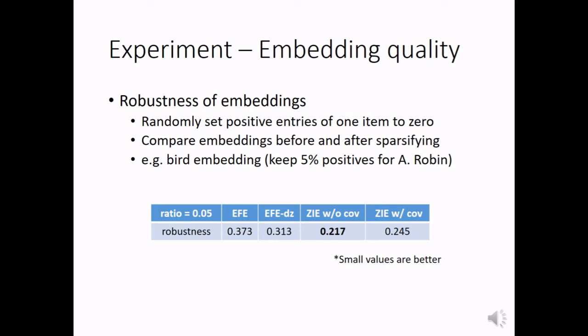The embedding vectors are more robust to data sparsity if they have smaller changes because of this data sparsity procedure. In the bird embedding task, we get results in this table. And we can see that our models can get more robust embedding vectors than the two baselines.